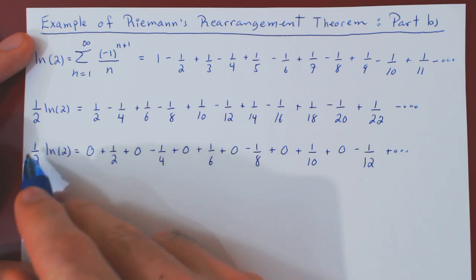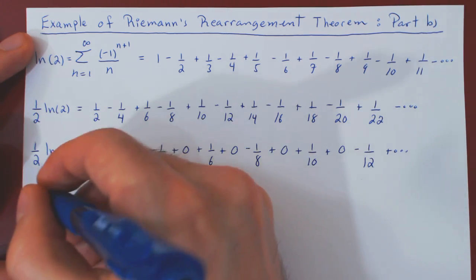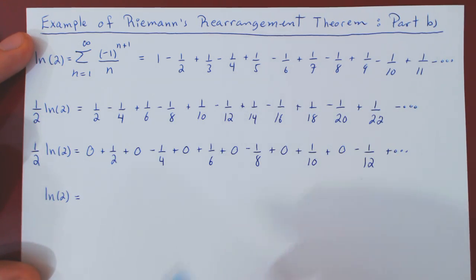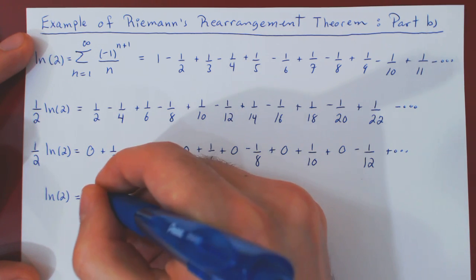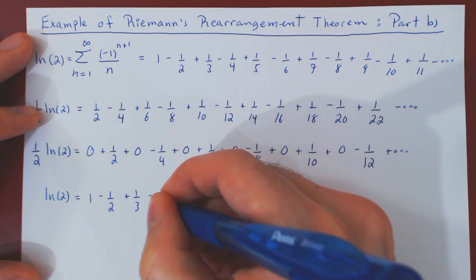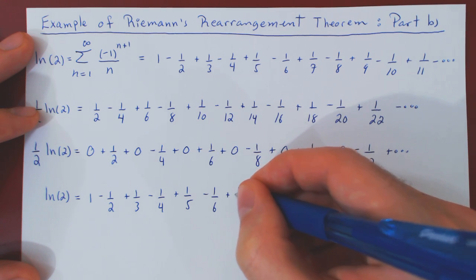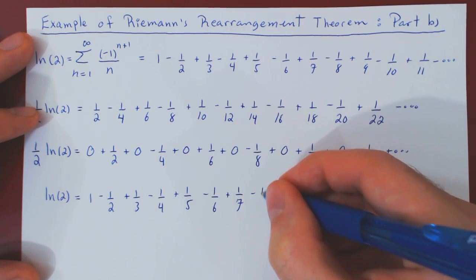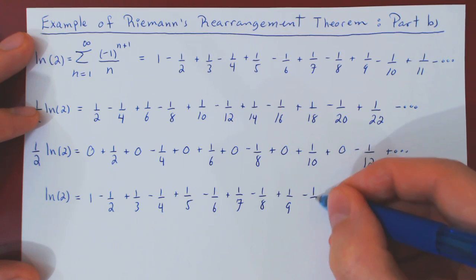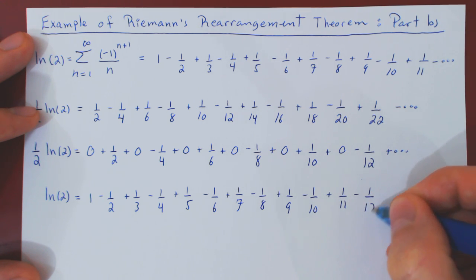Now let's write underneath the one-half ln(2) series the original series for ln(2). So ln(2), going back to the original series, is: 1 minus one-half, plus one-third, minus one-quarter, plus one-fifth, minus one-sixth, plus one-seventh, minus one-eighth, plus one-ninth, minus one-tenth, plus one-eleventh, minus one-twelfth, and so forth.